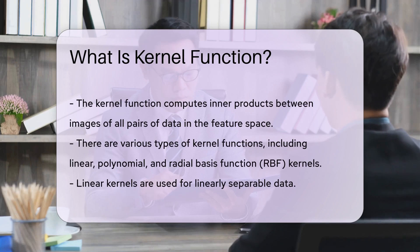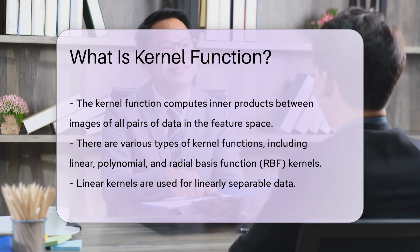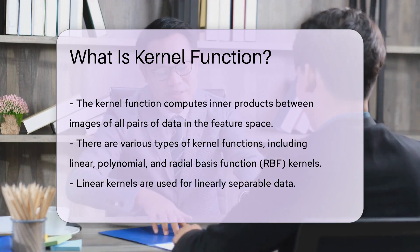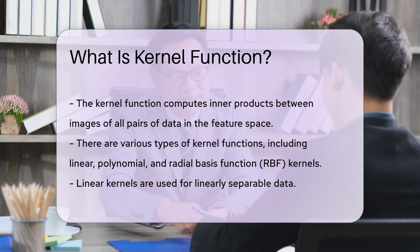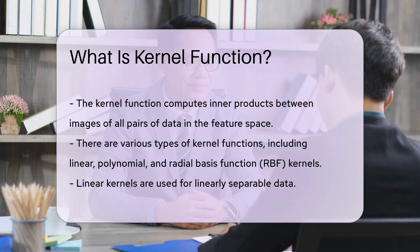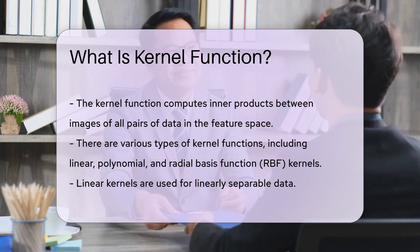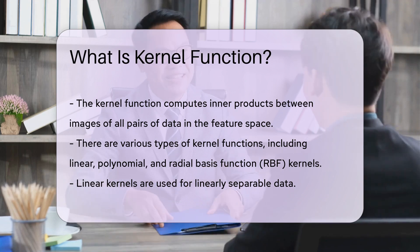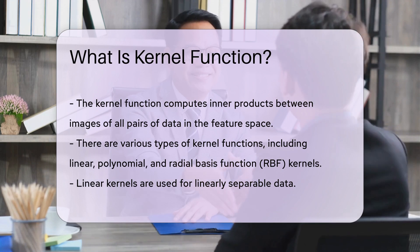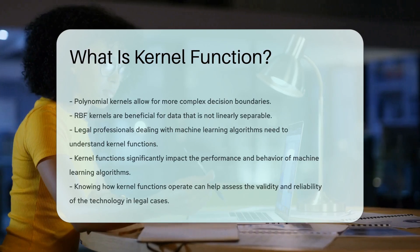There are several types of kernel functions, including linear, polynomial, and radial basis function, RBF kernels. Each type has its own advantages and is selected based on the specific problem at hand. Linear kernels are used when the data is linearly separable. Polynomial kernels allow for more complex boundaries. RBF kernels are useful for data that is not linearly separable.